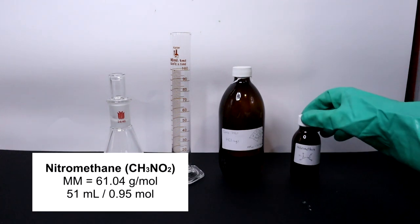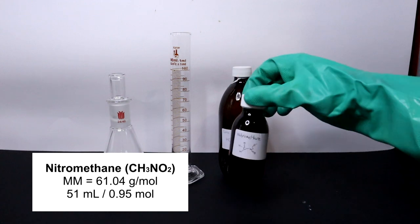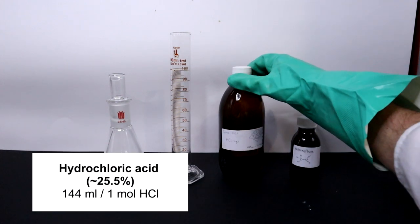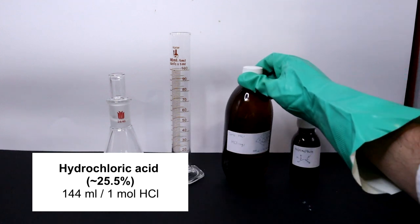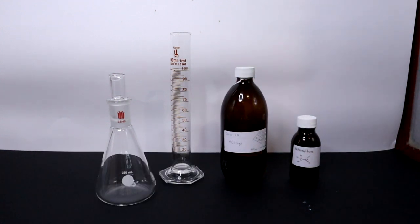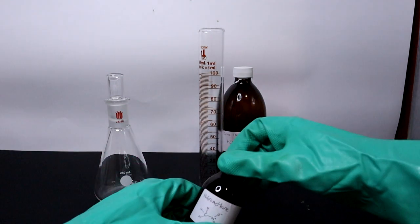In this procedure I am using 51 milliliters of nitromethane, which is just shy of one mole, followed by 144 milliliters of 25.5% hydrochloric acid. My idea here was to use the highest concentration of hydrochloric acid while ensuring that the boiling point of the mixture remained near 100 degrees Celsius.